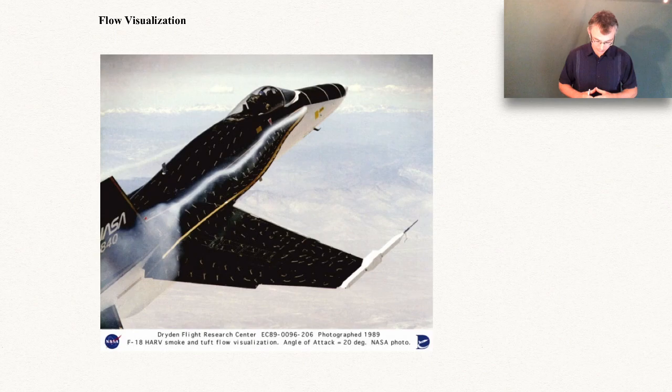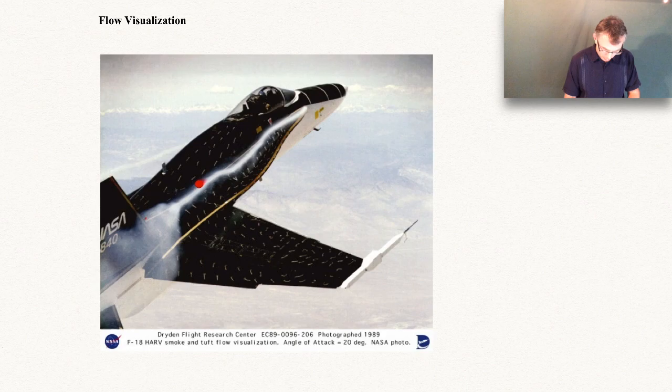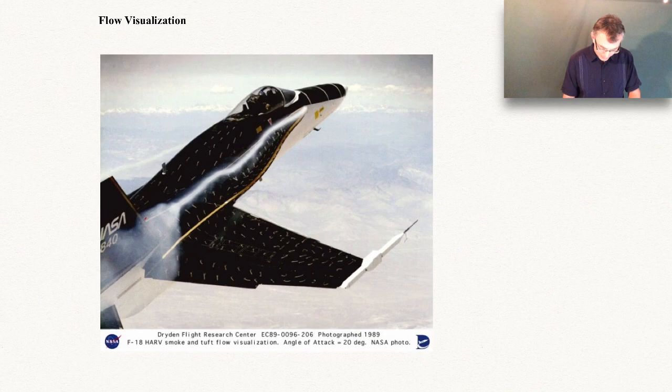Here we have an F-18 flying with two different flow visualization techniques. You'll see smoke going from the leading edge strake toward the tail — that's done on purpose, it's not an accident. This is an example of a streakline. A streakline is a line that connects all the fluid particles that have passed through the same point in space; all the fluid particles that went through this point picked up a little smoke and carried it further downstream.